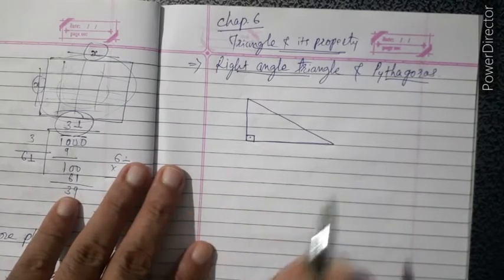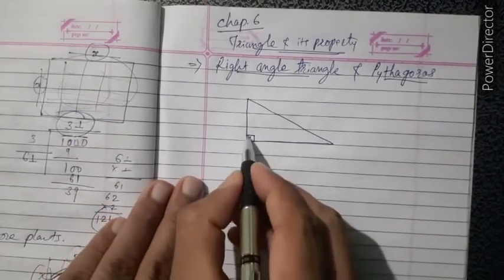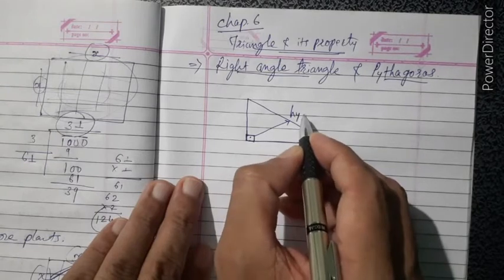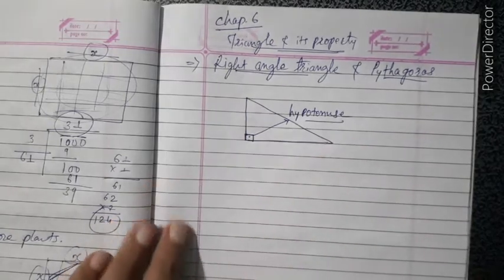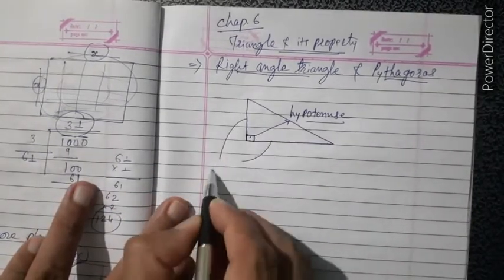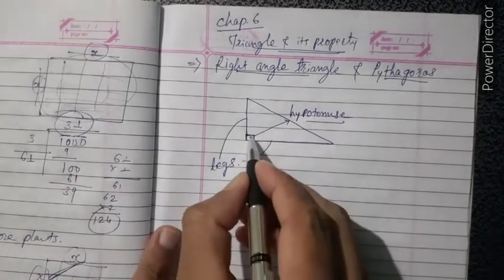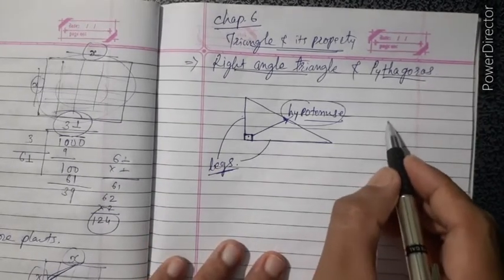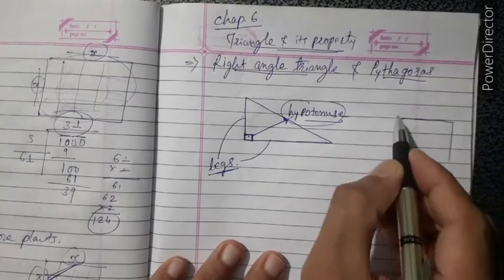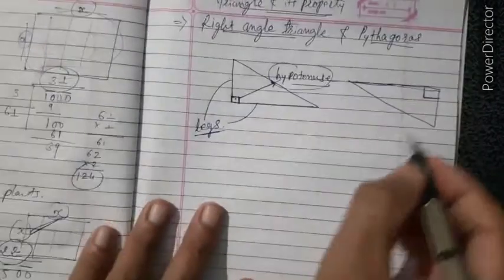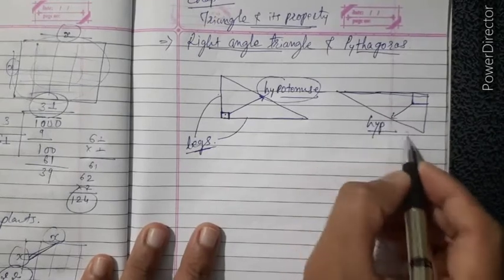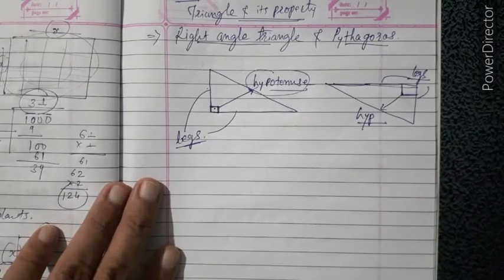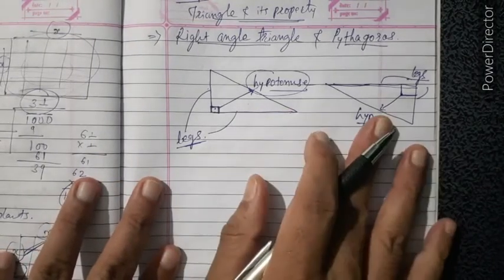Now, the parts of a right angle triangle: the angle which has 90 degrees — the opposite side of that angle is called the hypotenuse. The other two sides are called legs. So the opposite side of the right angle is called the hypotenuse, and the other two sides are called legs.